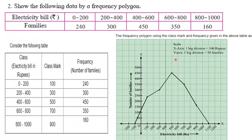Mention the scale which is used: 50 families, 1 unit is equal to on Y-axis, and on X-axis, 1 unit is equal to 100 rupees. So, mentioning the scale is also very important. XX dash, YY dash, origin O and all the coordinates properly. It is frequency polygon.